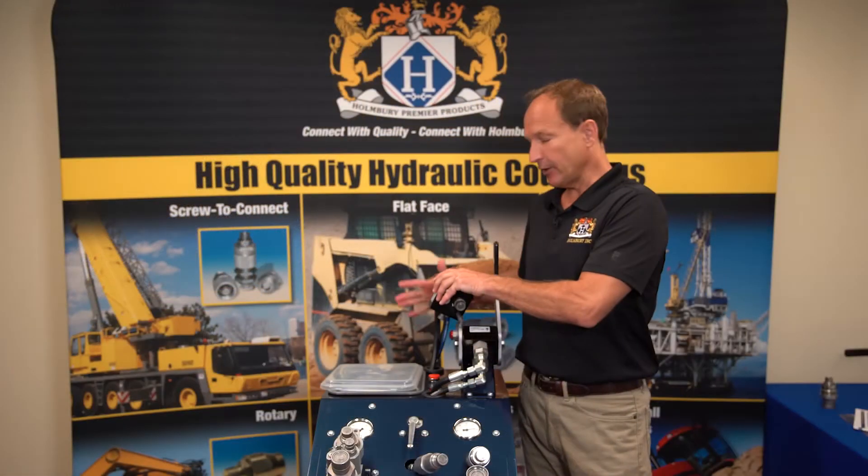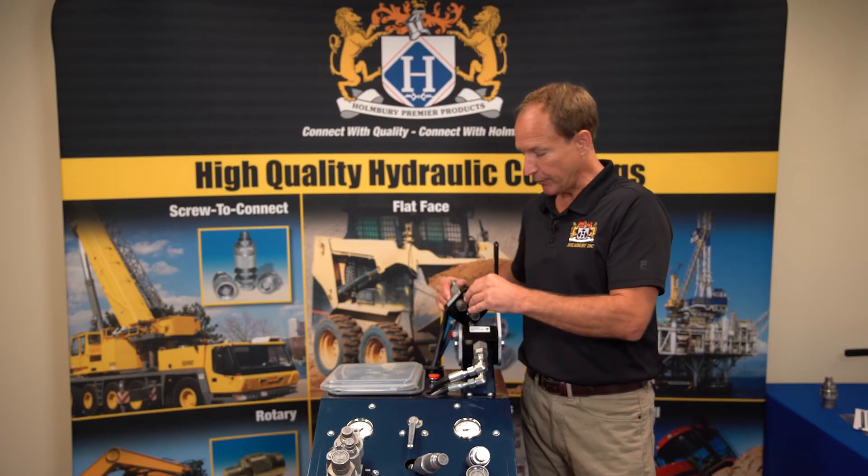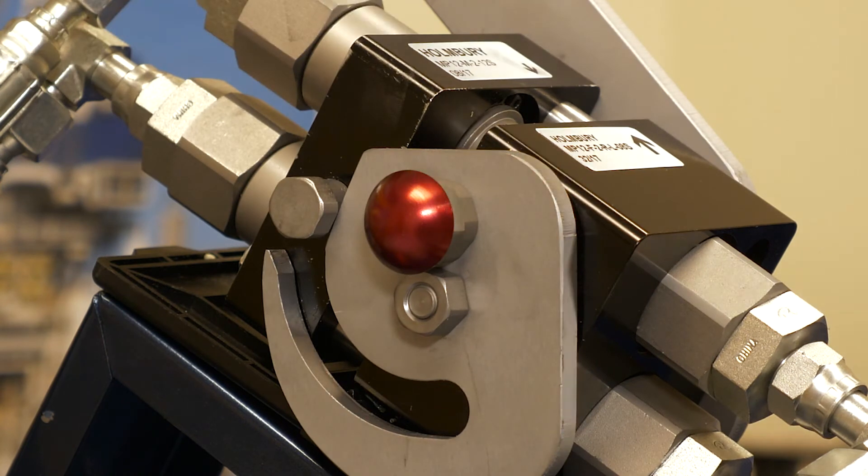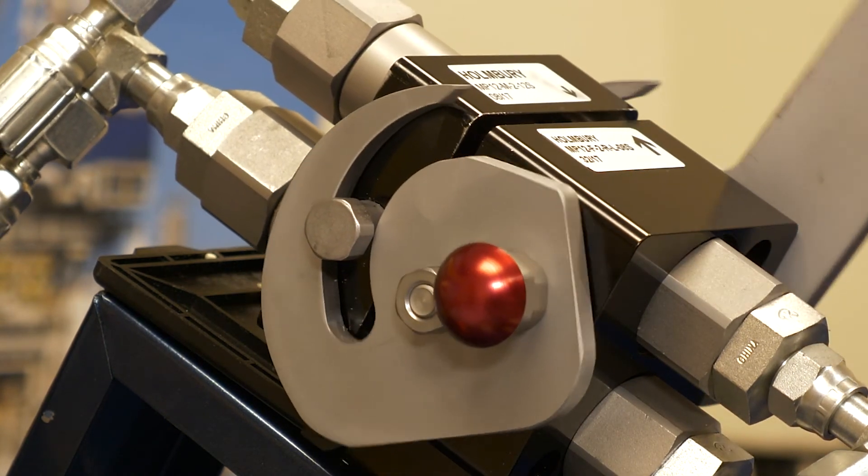We have 2,600 psi on our mobile plate, simulating trap pressure on the loader side. We're going to make our connection, line up our pins, and we're going to just bring our lever down and see that gauge go to zero.